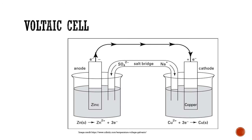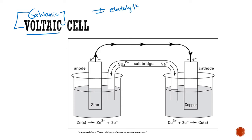We're going to look at voltaic cells first. Remember that voltaic cells and galvanic cells are the same things — different from electrolytic cells. Here is an example of a voltaic cell, also called a galvanic cell.